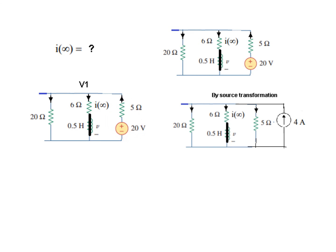But I think there is an easier way: source transformation. What I have done is transformed this into a current source in parallel with the resistance. The current source will be 20 divided by 5, which is 4 amperes in the direction of this one.